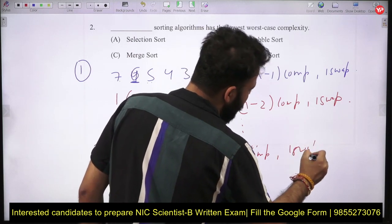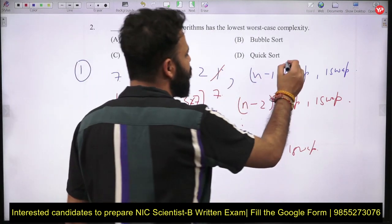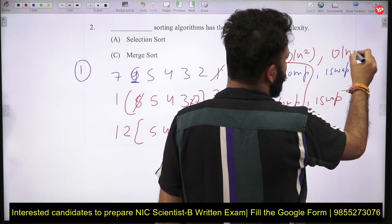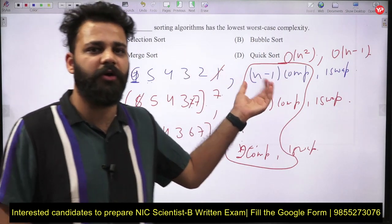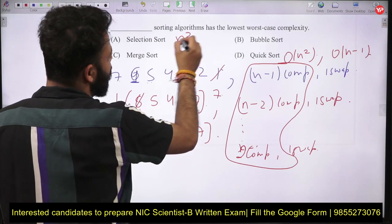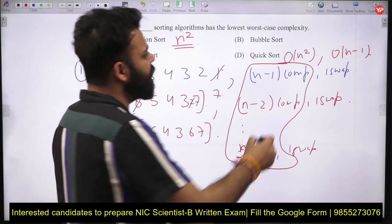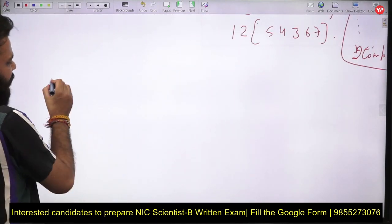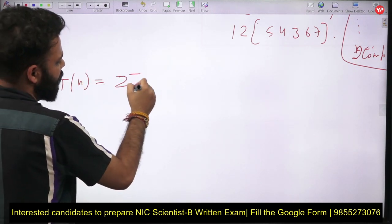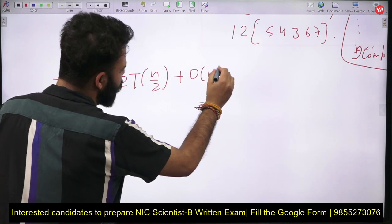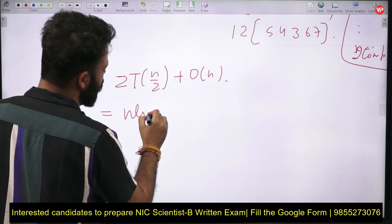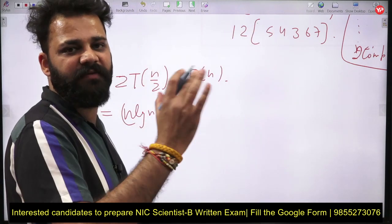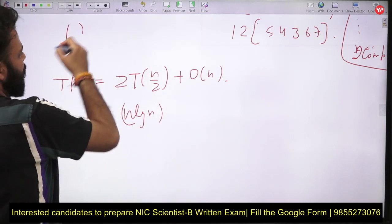In every case of selection sort, the number of comparisons is O(n²) and swaps are O(n), giving overall time complexity O(n²). Similarly, bubble sort is also O(n²). For quick sort in the best case, the array is divided into two equal parts and by the master theorem, the time complexity is O(n log n).